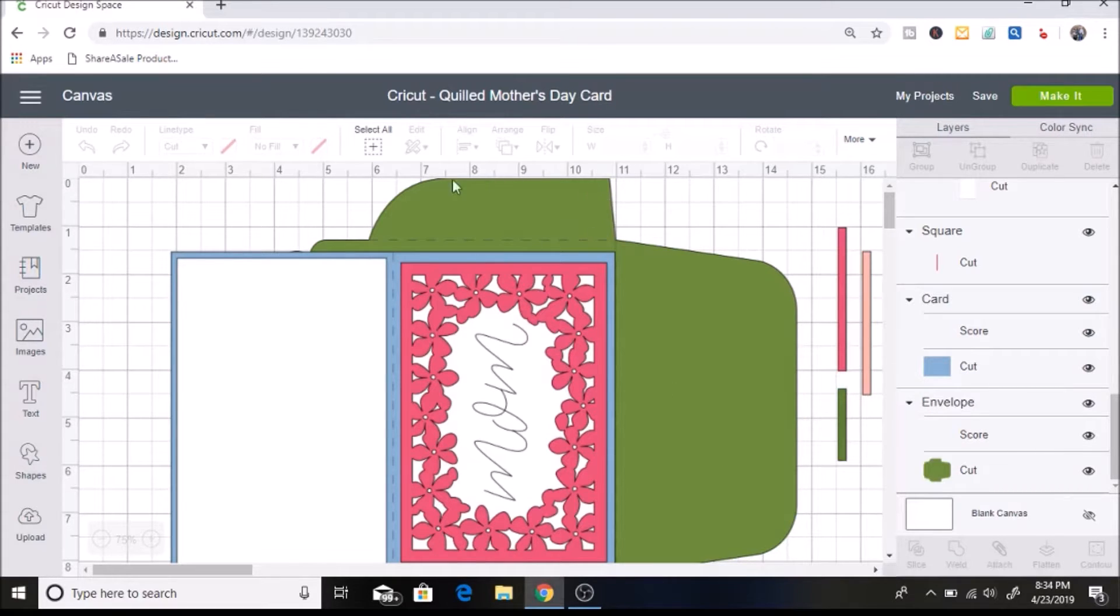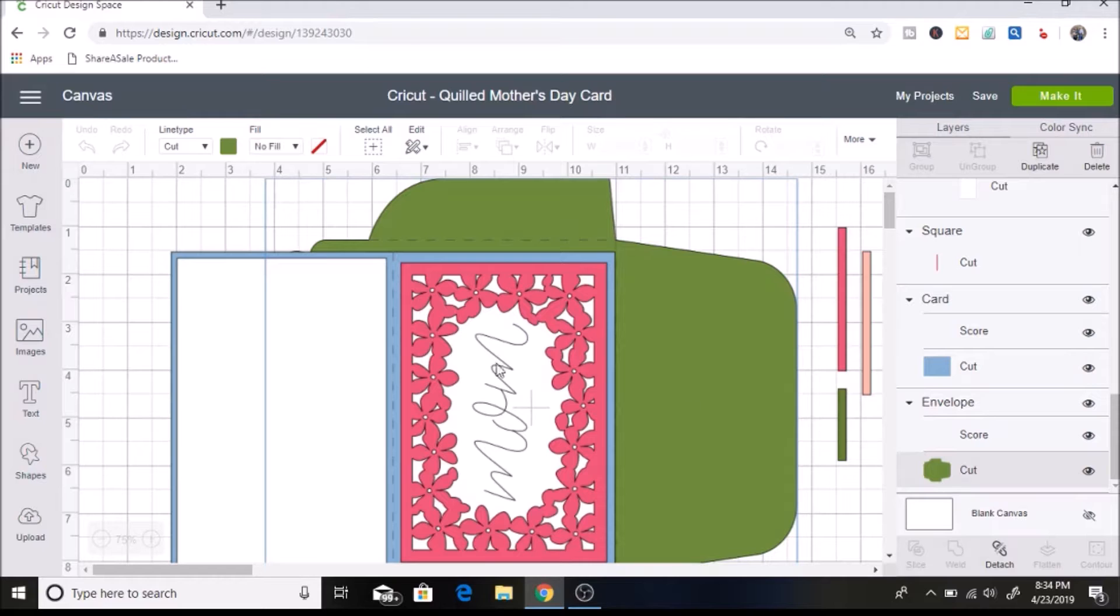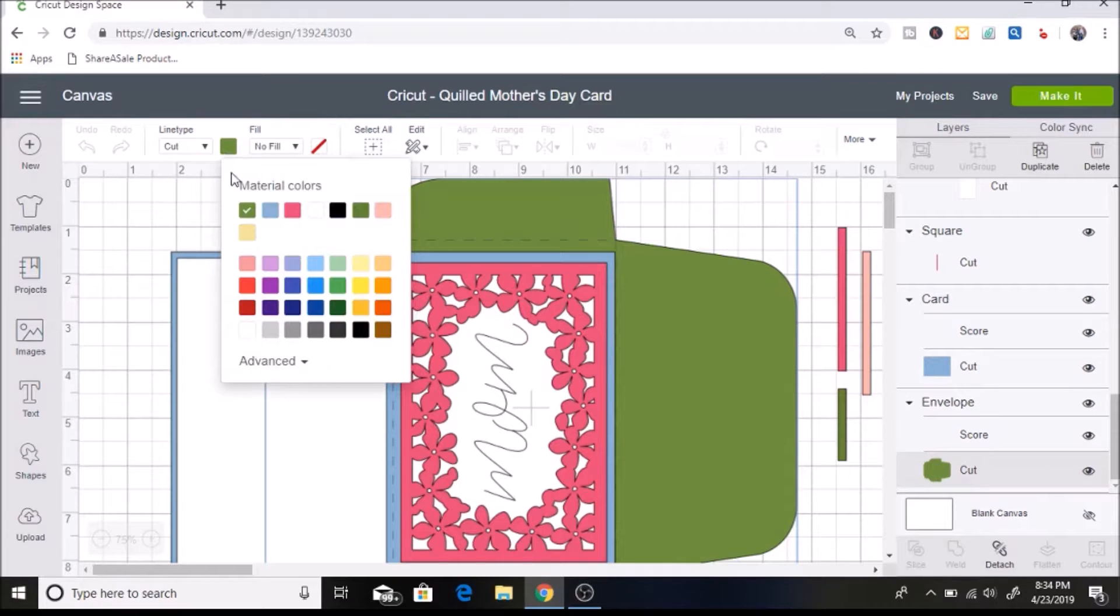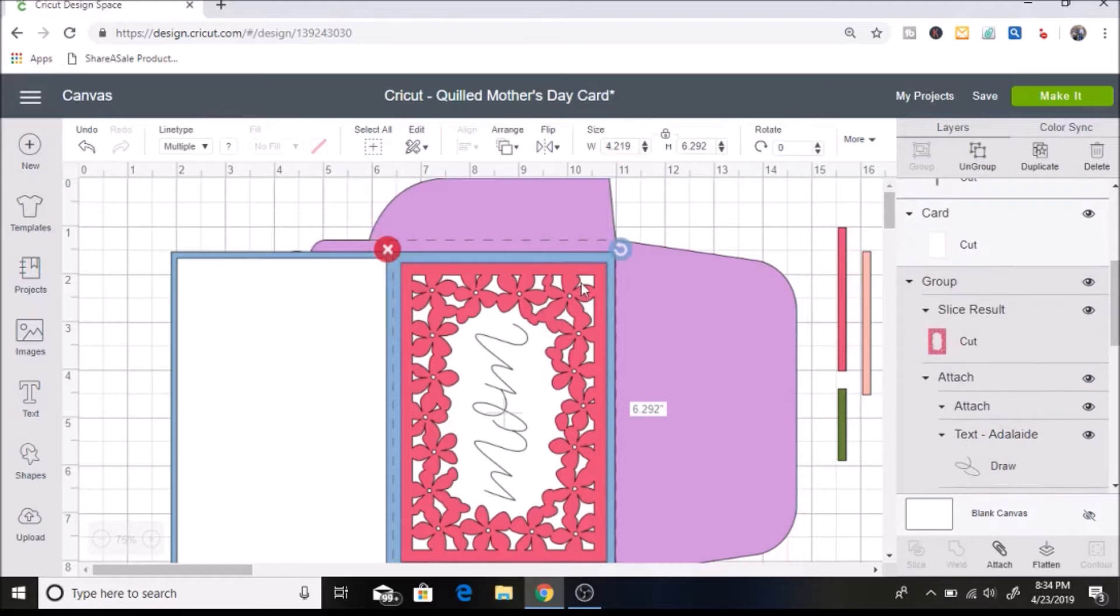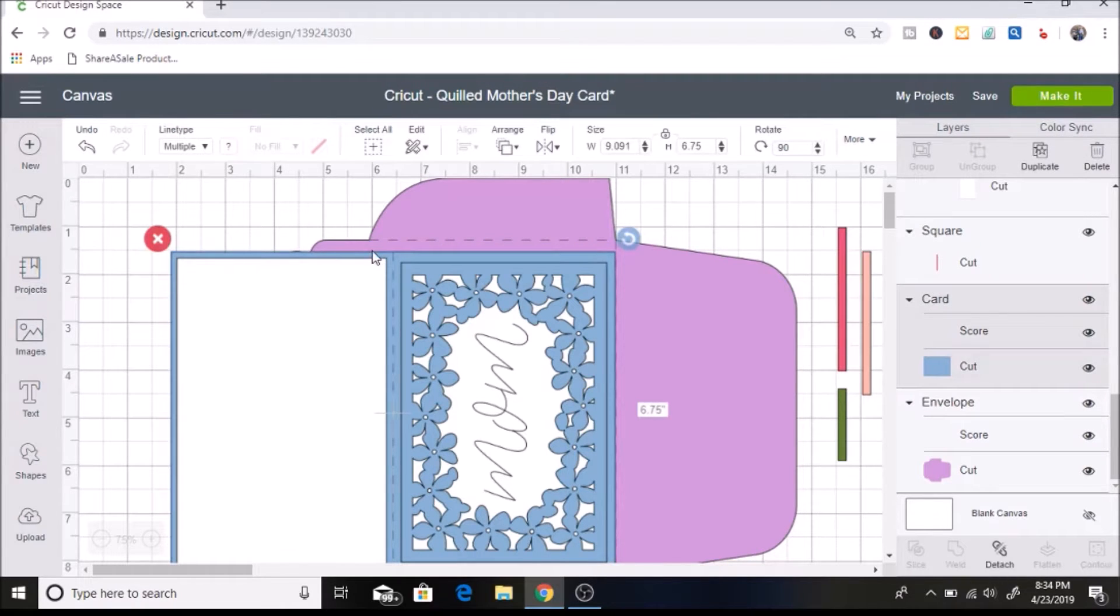So this green piece here is the envelope and that's going to be a purple color. So I am going to select that and you can see that score and cut is highlighted. So I'm just going to select cut and then I'm going to come up here and I am going to change it to a purple color. So the next thing I'm going to do is I want this piece with the little flowers on there. I want that piece to be blue. So I'm just going to change it to a light blue color.